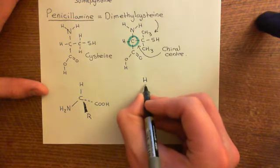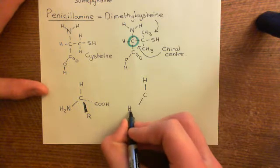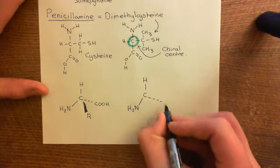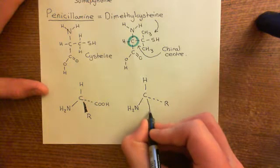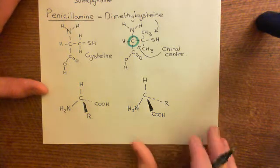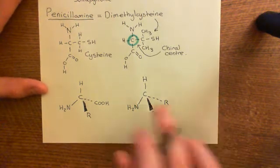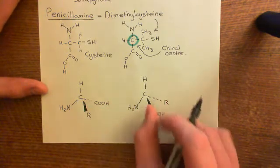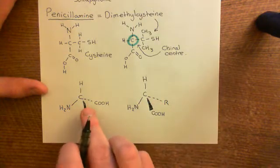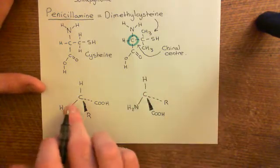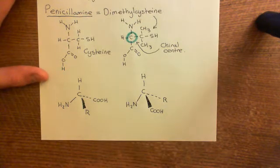The other optical isomer is the other way around — the R group goes into the page and the carboxylic acid group comes out towards us. These two molecules are not the same; you cannot turn one into the other without performing a chemical reaction — breaking bonds and swapping the two groups around. There is no way that just by rotating or changing the way you look at the molecule you can turn one into the other. They are two fundamentally separate molecules.